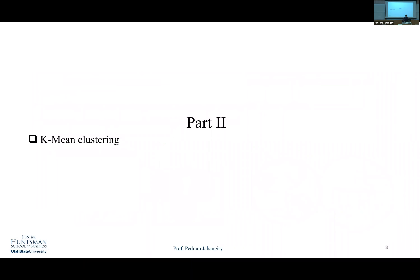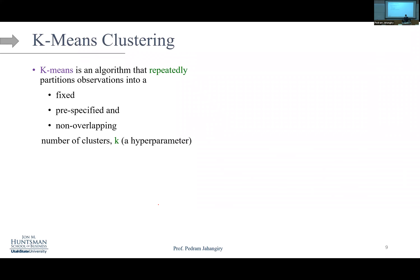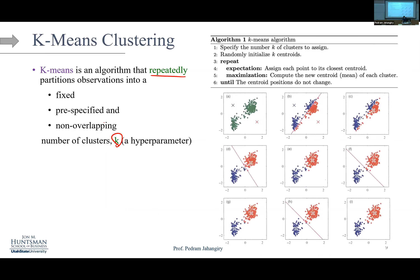K-means clustering is an algorithm that repeatedly partitions observations into a fixed, pre-specified, non-overlapping number of clusters k. You set that hyperparameter in advance — 2, 3, 4 classes. The algorithm is iterative. The entire dataset is initially unlabeled, and we look at it in two dimensions x1 and x2. The data is not labeled.